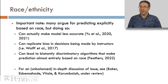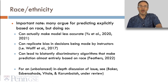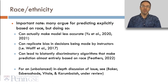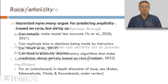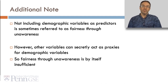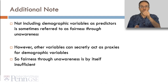As an important note, many people argue for predicting explicitly based on race. But first, doing so can actually make the model less accurate, per Renjo Yu's work. Second, it can replicate biases in decisions being made by instructors. And third, as Feathers noted, it can lead to blatantly discriminatory algorithms that make predictions based almost entirely on race. For an in-depth discussion of this issue, see our preprint. Also, not including demographic variables as predictors is sometimes referred to as fairness through unawareness — but other variables can secretly act as proxies for demographic variables, so fairness through unawareness is by itself insufficient. In my opinion it's a good start, especially if you're then testing for algorithmic bias, but it's not always enough.